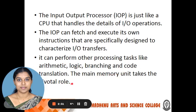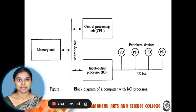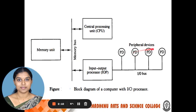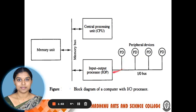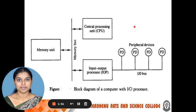The main memory unit takes a pivotal role and its function does not change. Looking at the block diagram of the IOP processor, the memory unit interacts with peripheral devices through either the central processing unit or the input-output processor. When the input-output processor is activated, the DMA mode is enabled. Once DMA mode is activated for peripheral devices, the IOP handles communication between those peripheral devices and the memory unit. Meanwhile, the CPU checks other devices that are not operating in DMA mode.